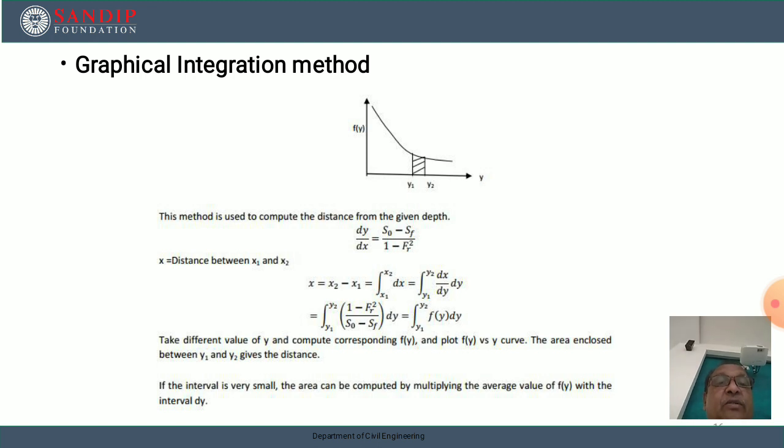Take different values of y and calculate the corresponding function f(y), and plot f(y) versus y curve. The area enclosed between y₁ and y₂ gives the distance. If the interval is very small, the area can be calculated by multiplying the average value of f(y) with the interval dy.